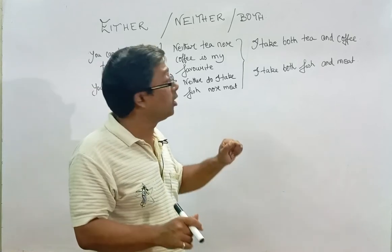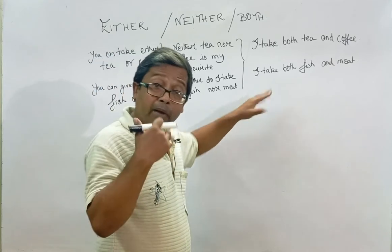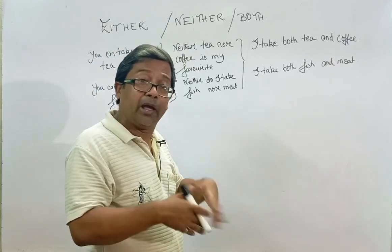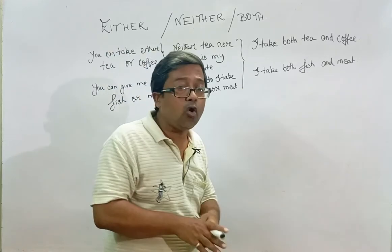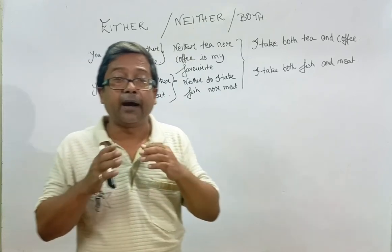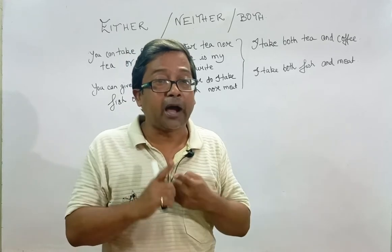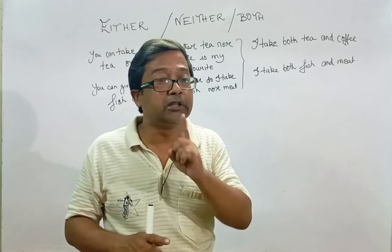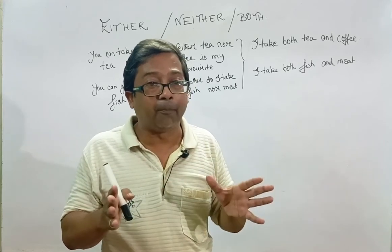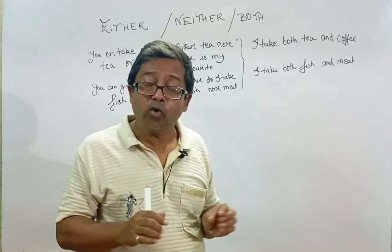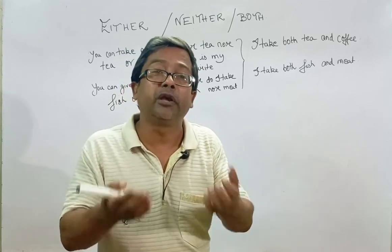You have another option: both — two things in front of you and you can take both of them. For example: I take both fish and meat. So either, neither, and both are all used for two things. Either is used when you have a choice between two and take one. Neither is when you don't like any of the two. Both is when there are two things and you can take both.